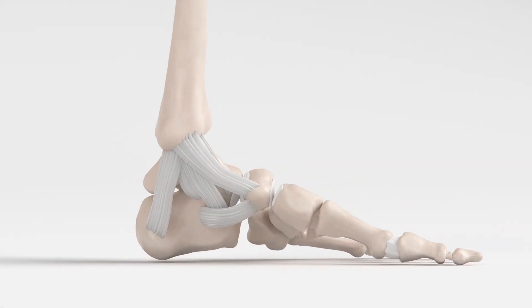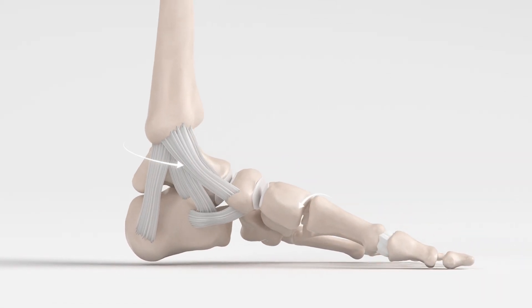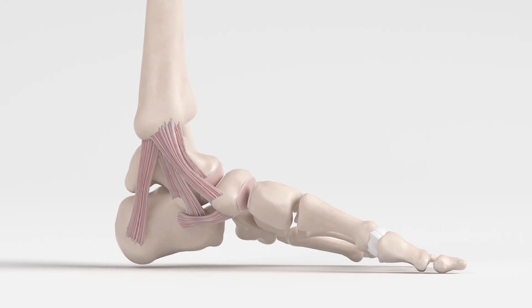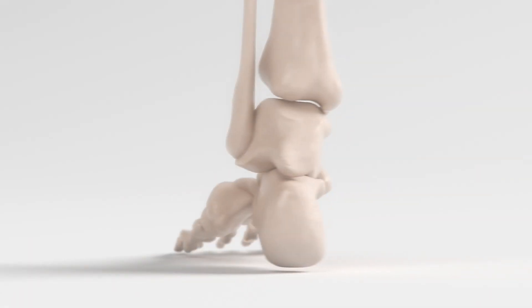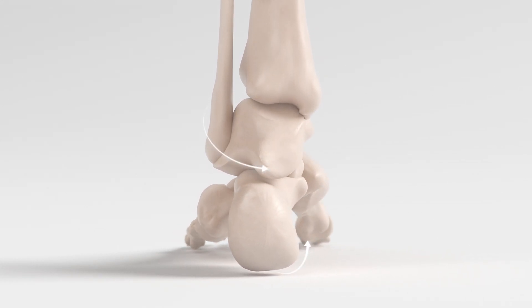During pronation, the arch collapses and the calcaneus everts during mid stance. Ligaments behave like bungee cords, absorbing energy by stretching and slowly releasing it as pressure is removed.